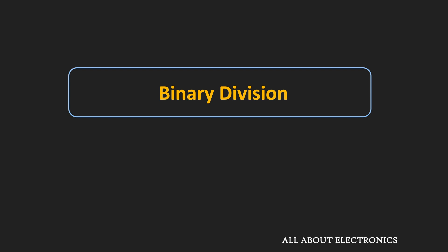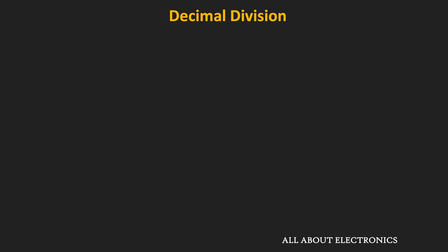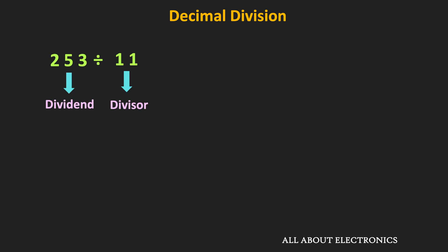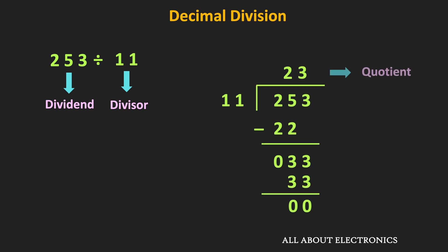Binary division is similar to decimal division, so let us quickly refresh the typical division procedure. Let's say we want to divide 253 by 11. When we perform the division, we will get the quotient and the remainder. Let us see what we are exactly doing in this decimal division.